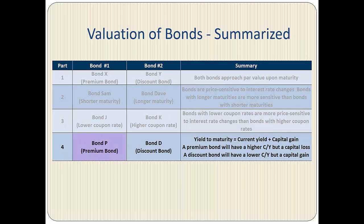In Part 4, we compared premium bond P to discount bond D and learned that yield to maturity equals current yield plus capital gains yield. We also learned that a premium bond will have a higher current yield but a capital loss, and that a discount bond will have a lower current yield but a capital gain, assuming yield to maturity remains constant. So this concludes the five parts on valuation.